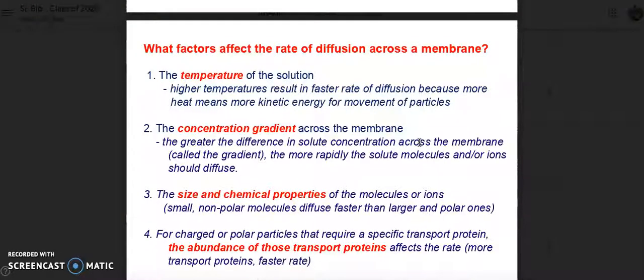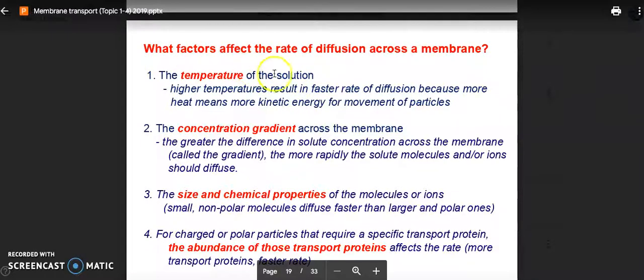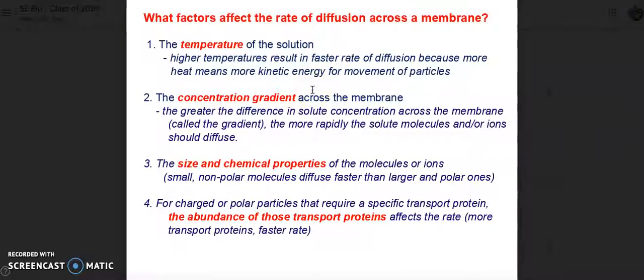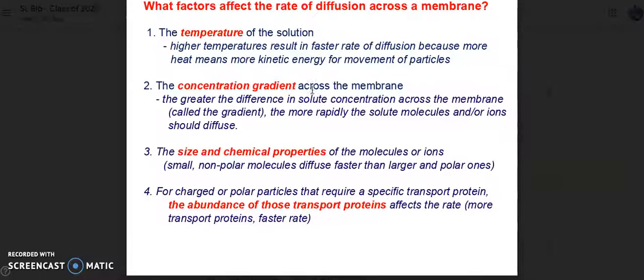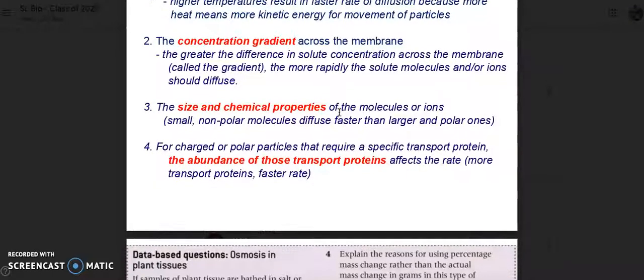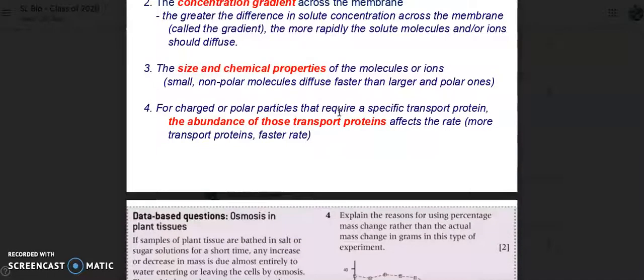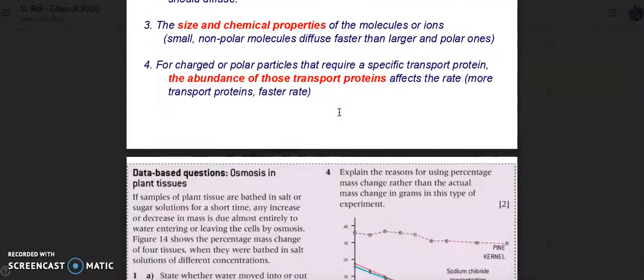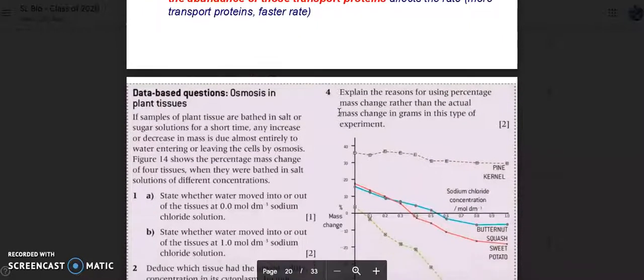What factors affect the rate of diffusion across a membrane? The temperature of a solution - higher temperatures will result in a faster rate of diffusion because more heat means more kinetic energy for movement of particles. The concentration gradient across the membrane - the greater the difference in the solute concentration across the membrane, called the gradient, the more rapidly the solute molecules and/or ions should diffuse. The size and chemical properties of the molecules or ions - small nonpolar molecules diffuse faster than larger and polar ones. And for charged or polar molecules that require a specific transport protein, the abundance of those transport proteins affects the rate.